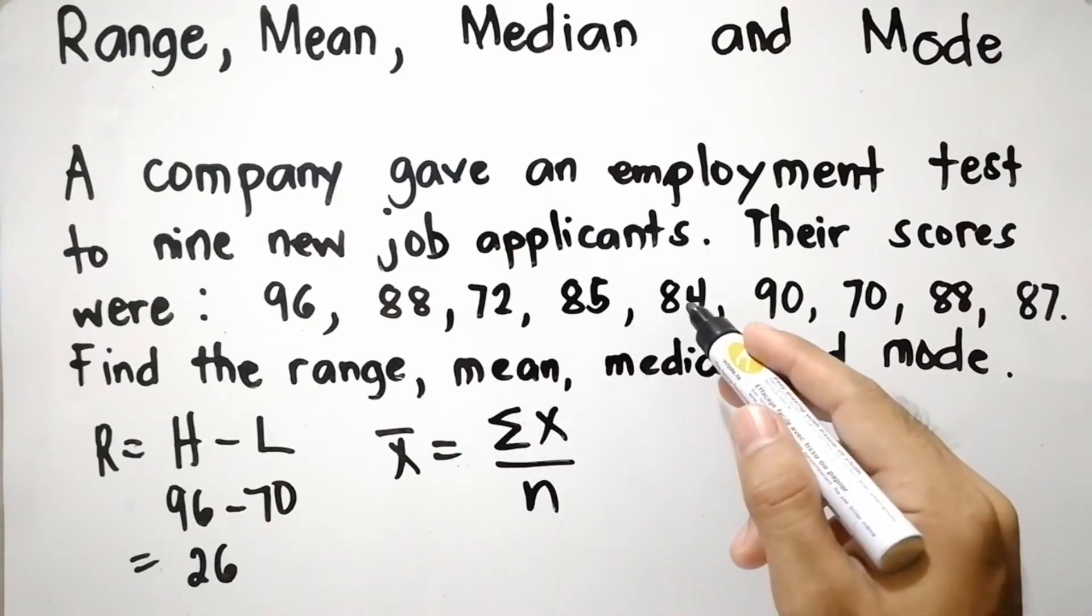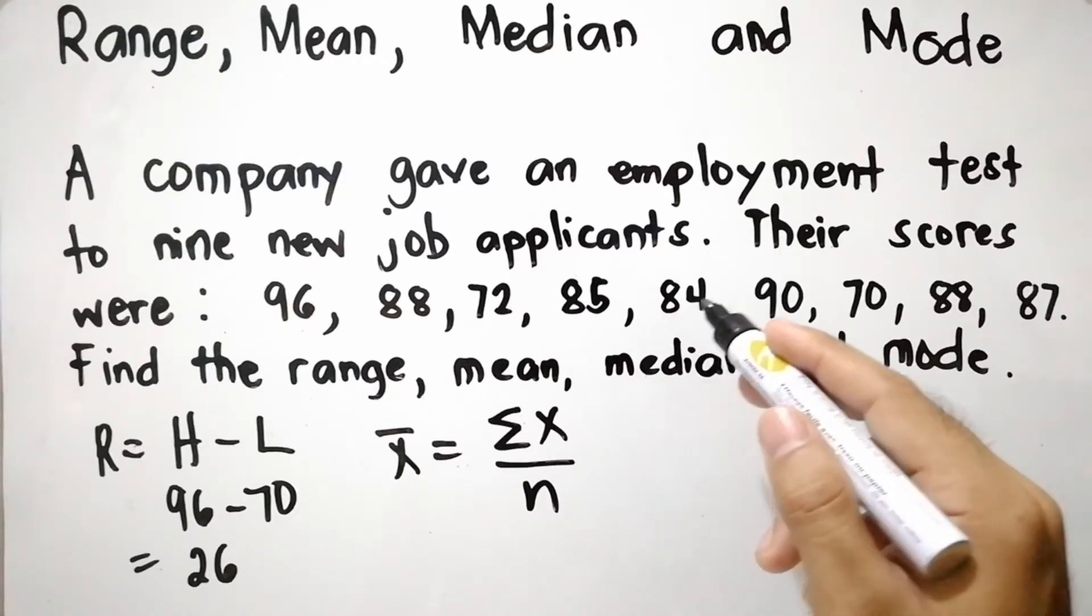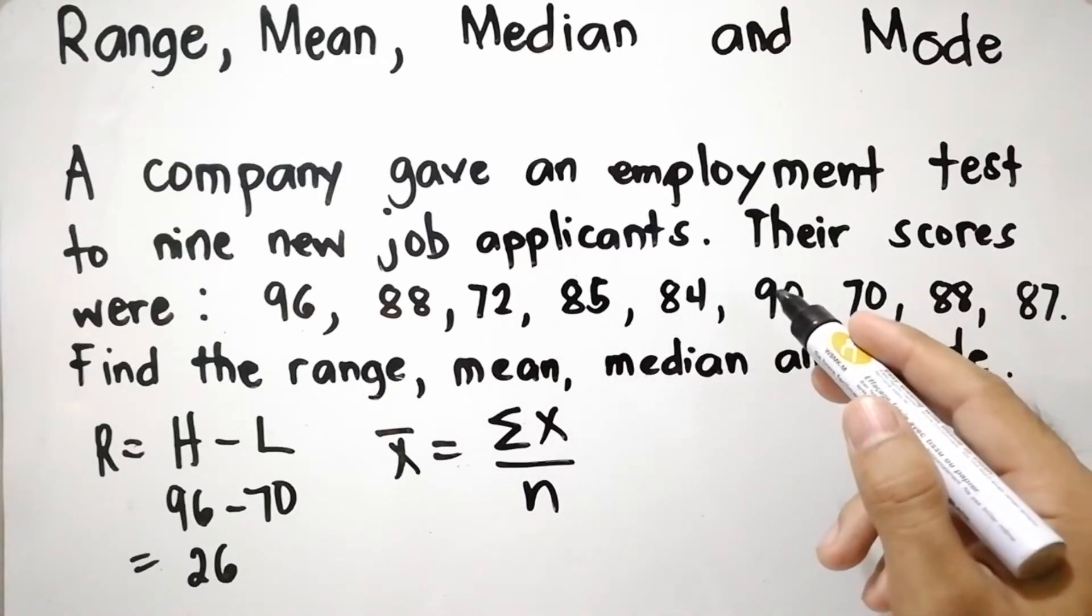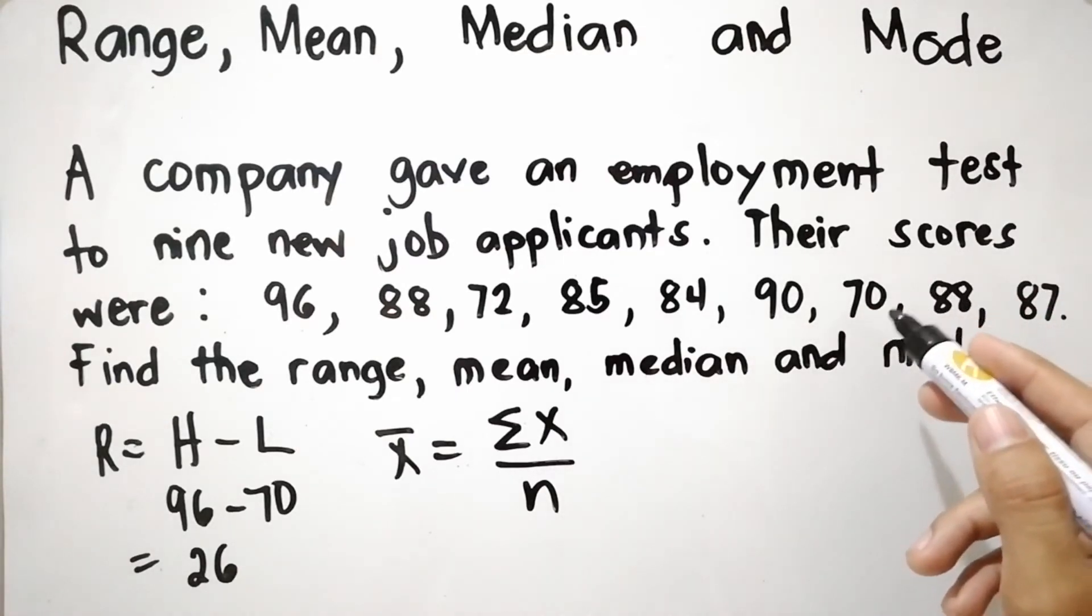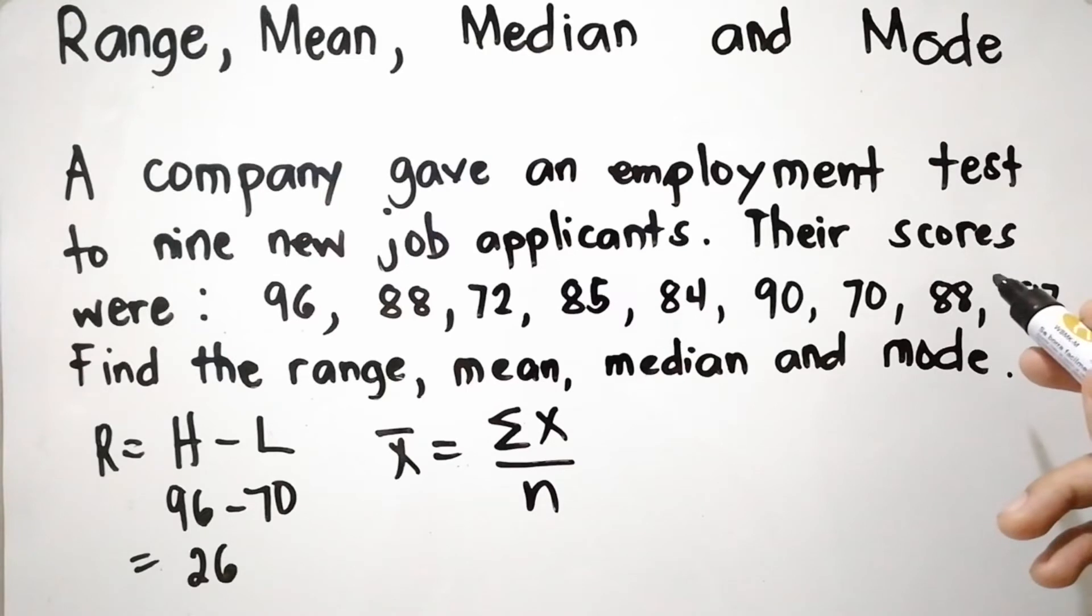Plus 84, that is 425, plus 90, that is 515, plus 70, that is equal to 585, plus 88, that is equal to 673, and plus 87, that is equal to 760.